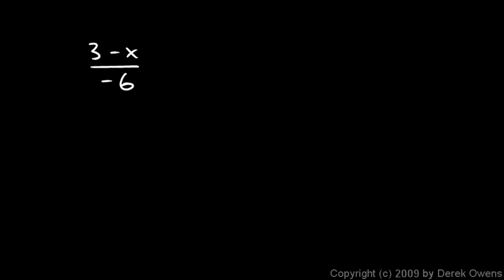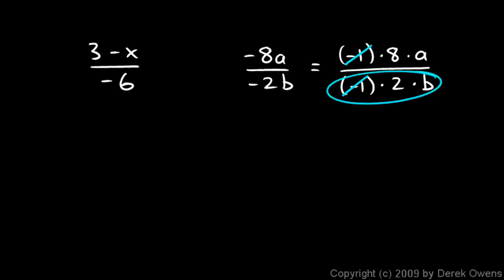In the case that we were thinking about earlier, negative 8a over negative 2b. Everything in the numerator there and everything in the denominator are multiplied. We can think of this as negative 1 times 8 times a over negative 1 times 2 times b. And, the negative 1 on the top and the bottom can cancel out. Note that negative 1 is a factor of our numerator and a factor of our denominator. So, those can cancel out. And, that's the same as cancelling out those negative signs.